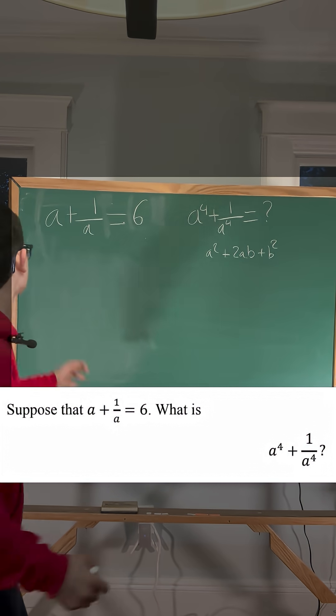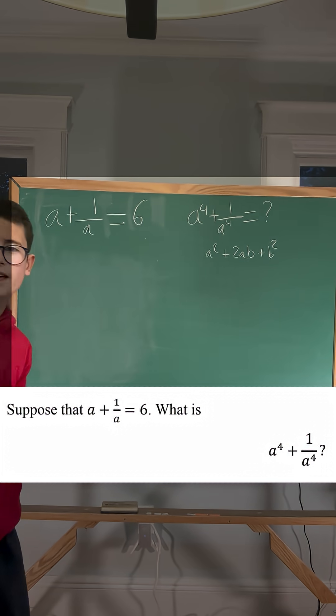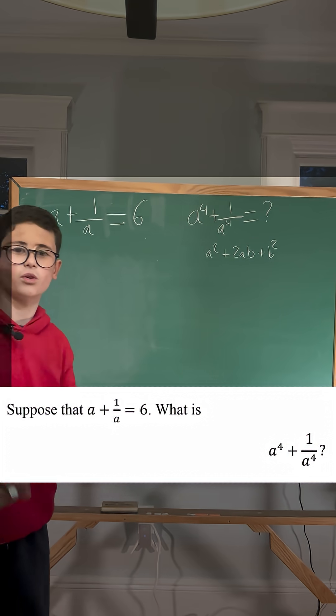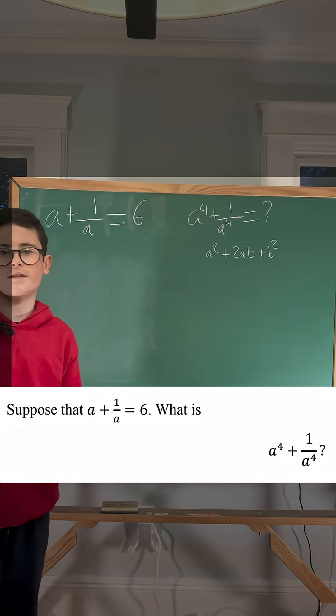This problem gives us that a plus 1 over a equals 6, and asks us to find a to the 4th plus 1 over a to the 4th. We're going to find that out.